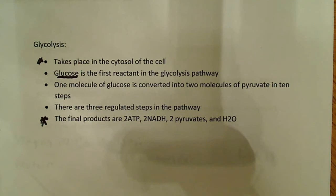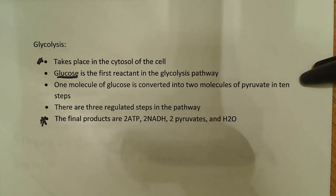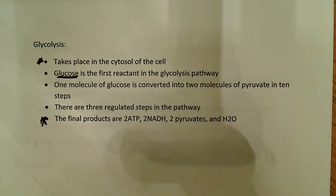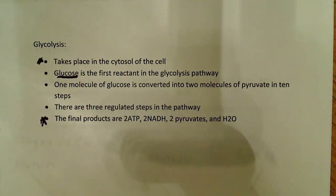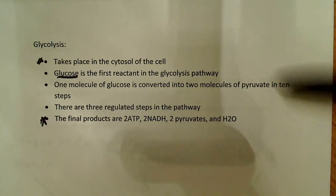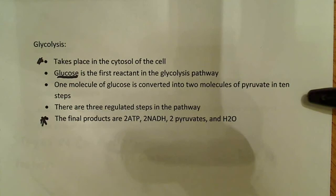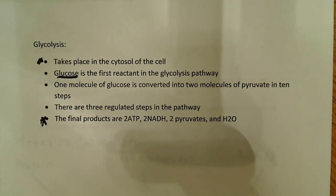Glycolysis is the catabolism of glucose. One molecule of glucose is converted into two molecules of pyruvate in a 10-step process. Enzymes can generally only catalyze one biochemical reaction, so every one of these 10 reactions requires a different enzyme — they can only make one chemical change to the substrate at a time.